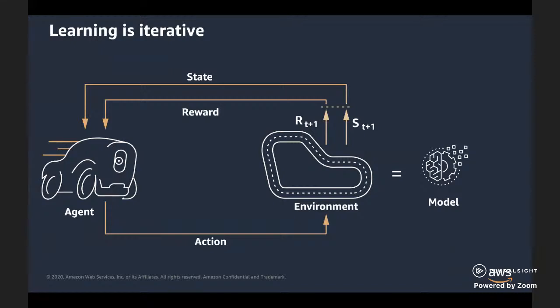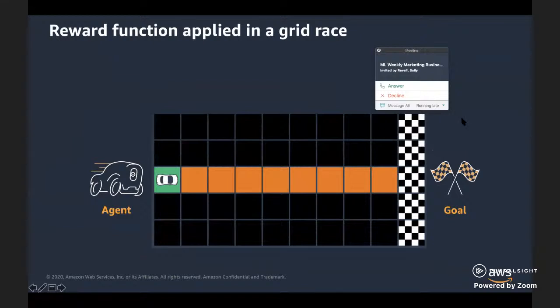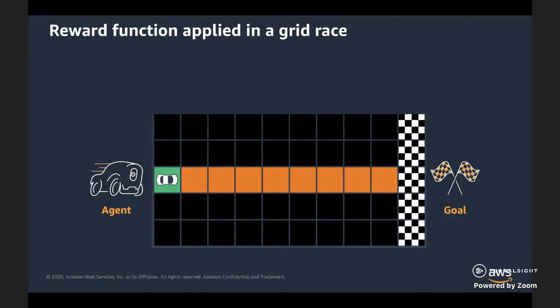DeepRacer collects experience — the state, action, reward, and next state. All the steps from the starting point until the terminal state is called an episode. Once the agent has collected experience, generally over 20 episodes (a hyperparameter you can specify), it starts updating and training its model. The goal during training is to figure out which actions in which state will lead to the maximum cumulative expected rewards across all possible options and decisions. Once trained, the model is sent back to the agent to collect more experience, with exploration vs. exploitation controlled through hyperparameters.